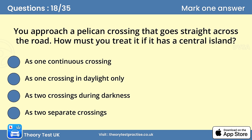Question 18. You approach a pelican crossing that goes straight across the road. How must you treat it if it has a central island? A pelican crossing that goes straight across the road must be treated as one continuous crossing, even if it has a central island. The lights controlling the crossing show to both directions of traffic. You must give way to pedestrians who are still crossing when the amber light is flashing.